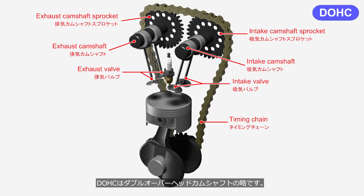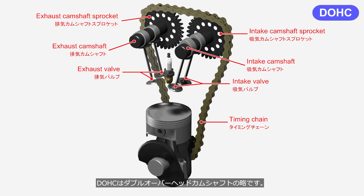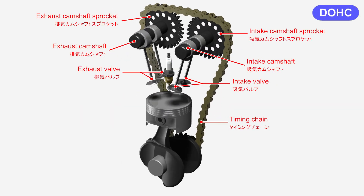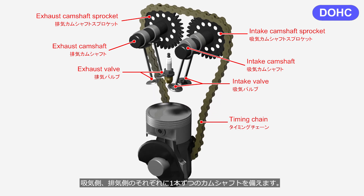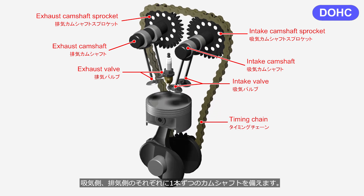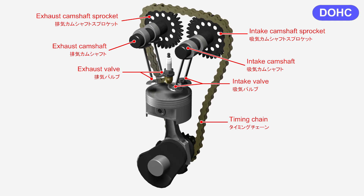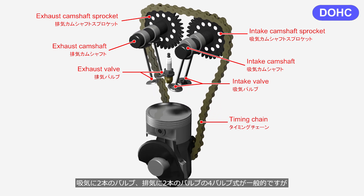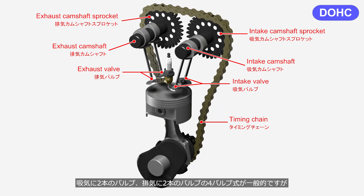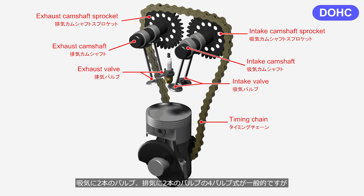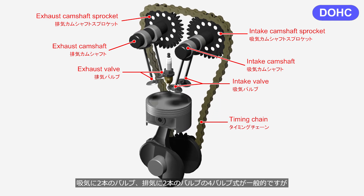DOHC stands for double overhead camshaft. It features one camshaft for intake and one for exhaust. The four-valve type, with two valves for intake and two for exhaust, is common.